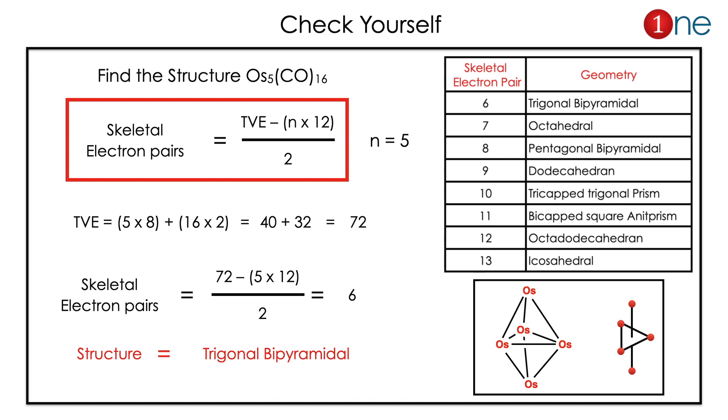Here you have 5 metals, so 72 minus 5 times 12, which is 12, divided by 2 equals 6. 6 means you have trigonal bipyramidal. So if you see the structure, 3 osmium in plane and 2 osmium in the axial position. So trigonal bipyramidal. It is that easy.